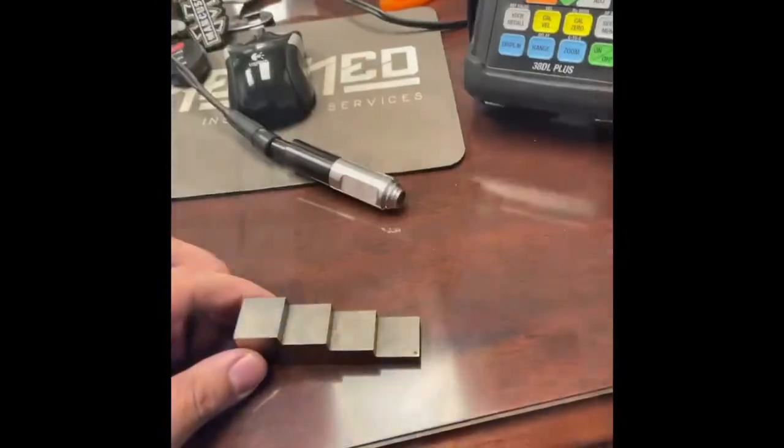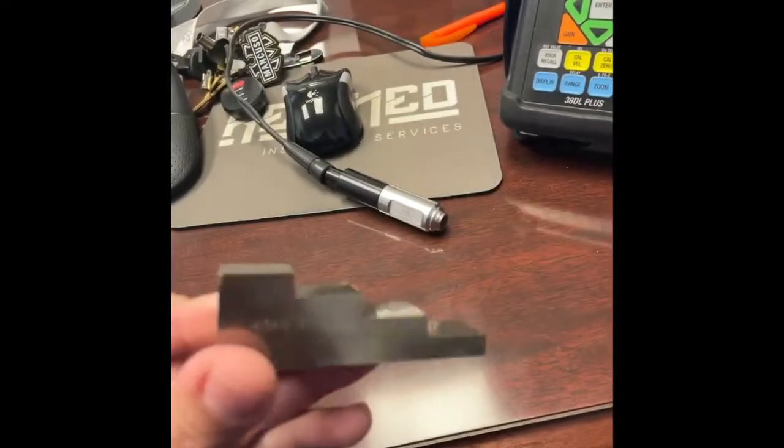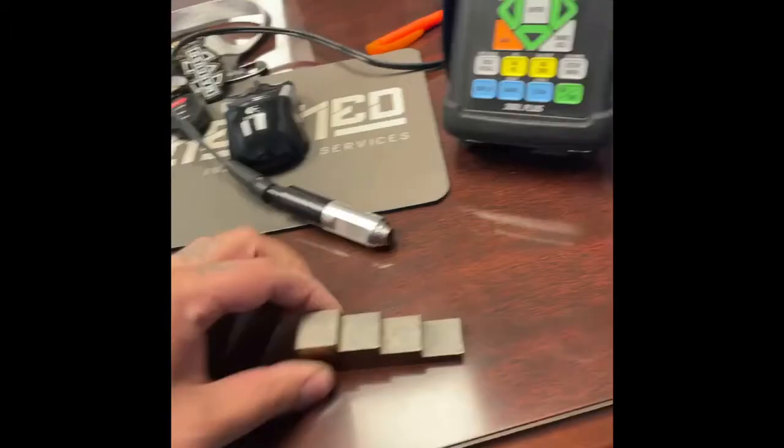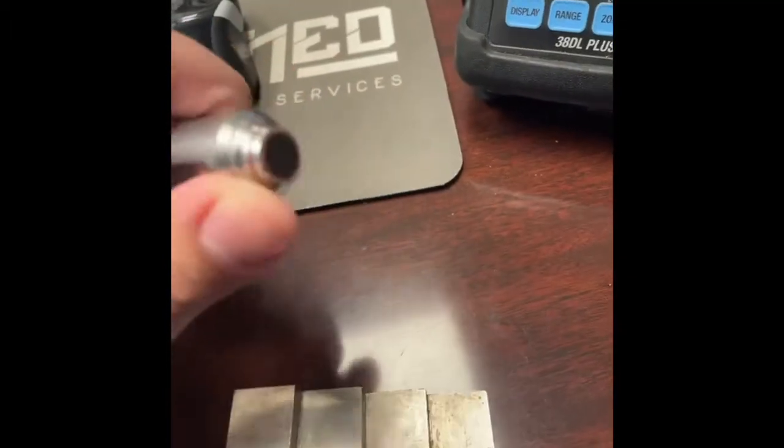Good morning. My name is Theo Young. I'm with Refined Inspection Services, and I thought I'd show you guys how to calibrate a 38DL Plus using multiple back wall echoes. So I'm going to be using a 1-inch to 1-4-inch step wedge. It's 4340, a D790SM dual element transducer.